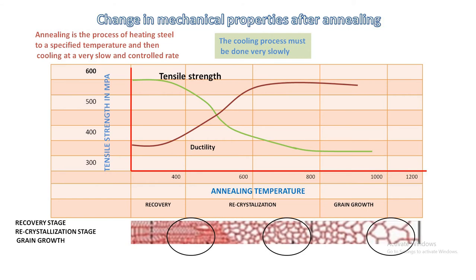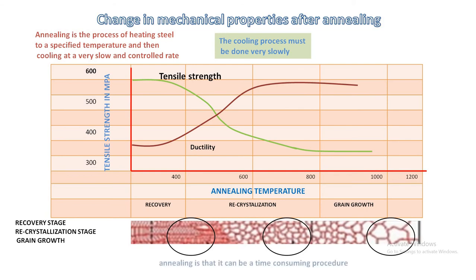The main advantages of annealing are in how the process improves the workability of a material, increasing toughness, reducing hardness, and increasing the ductility and machinability of a metal. The heating and cooling process also reduces the brittleness of the metal, which enhances the magnetic properties and electrical conductivity.